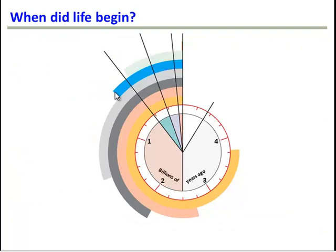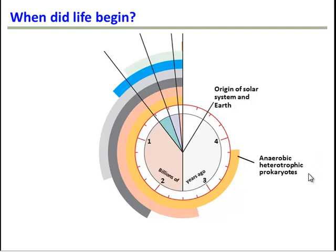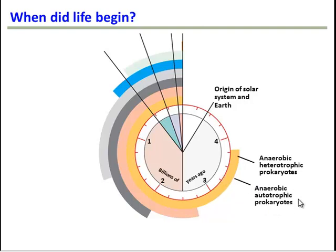So when did this all happen? The Earth itself came to be about 4.5 to 4.6 billion years ago. The first living things likely evolved about 3.9 billion years ago, and those organisms looked like prokaryotes. They were anaerobic, meaning they didn't need oxygen to survive, and they were heterotrophic — they consumed chemicals in their environment. A little bit later, perhaps around 3.5 billion years ago, we had anaerobic autotrophs, meaning some prokaryotes that could do photosynthesis. This probably came after heterotrophs because photosynthesis is a pretty complex reaction, and so it took time for that to evolve.